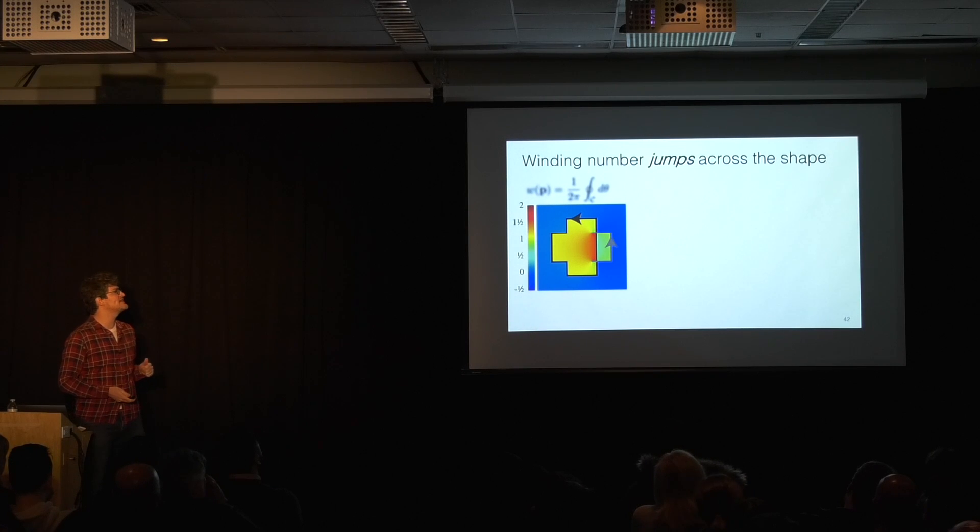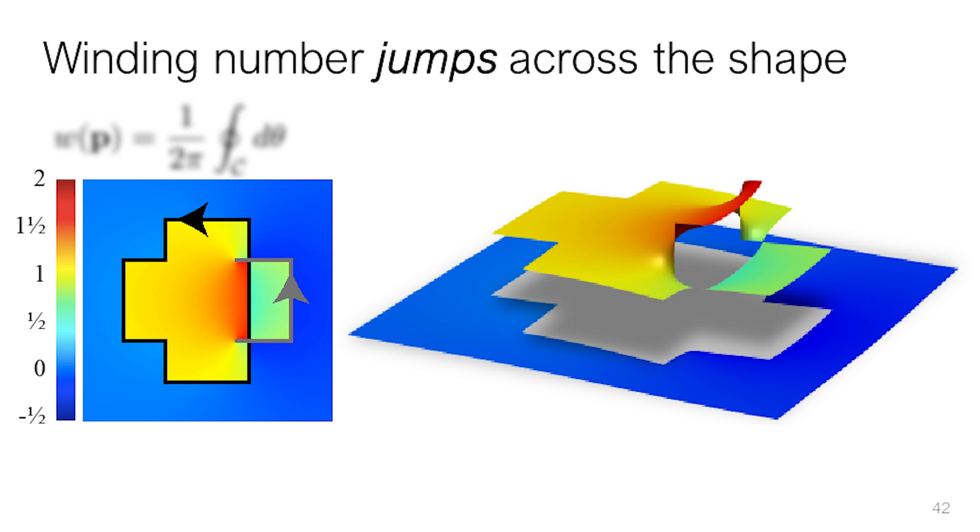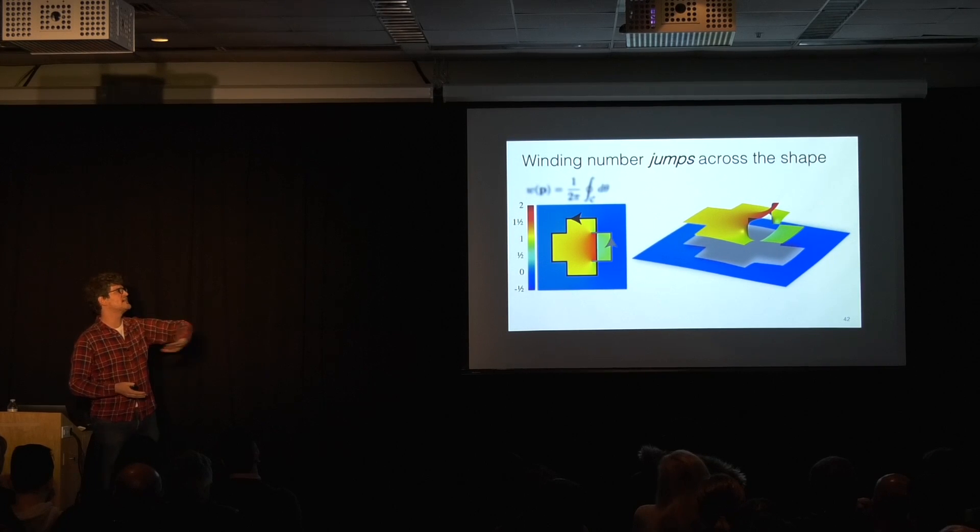We can consider more complicated examples like this where we have some overlapping pieces. And if we turn it sideways and view it as a height field, we can see that it very clearly delineates what we would normally think of as inside versus outside. You can sort of just imagine skimming a knife underneath of it to determine what's inside or outside.